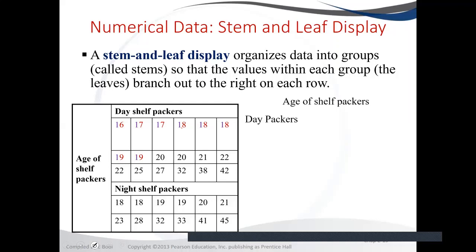So how do we then construct the stem-and-leaf plot? We're going to start with the day packers. We start with the stems: 1 is a stem, 2 is a stem, 3 is a stem, and 4 is a stem. We put them as stems 1, 2, 3, 4, and then after each stem we put the leaves.